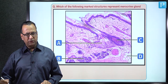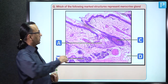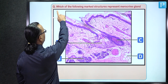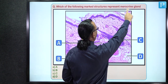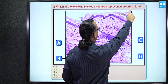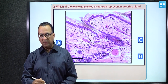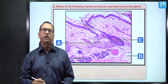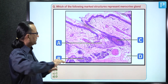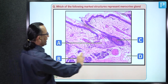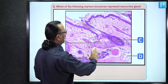This is a diagram-based question asking which marked structure represents a merocrine gland. Depending upon the manner of secretion, glands can be merocrine, apocrine, or holocrine. Focusing on this diagram, we understand it is a section taken from a skin specimen.